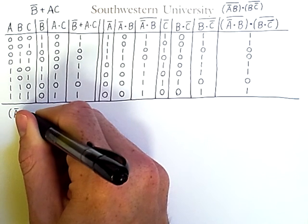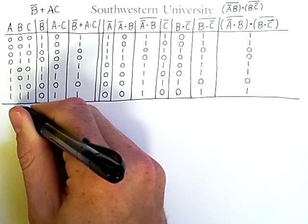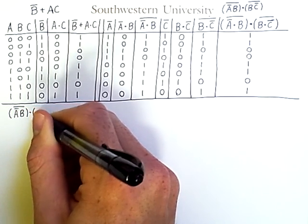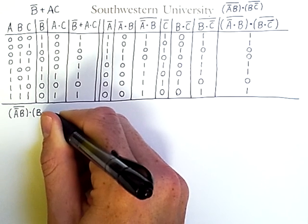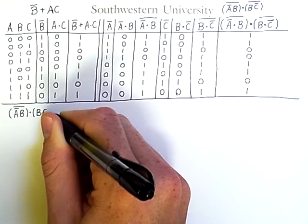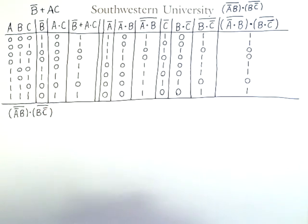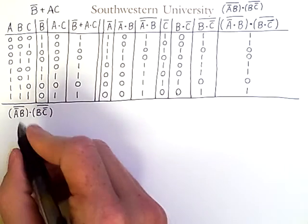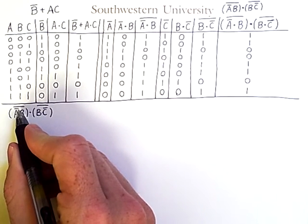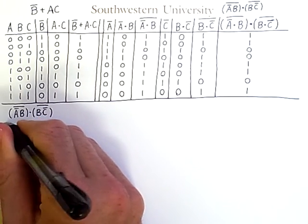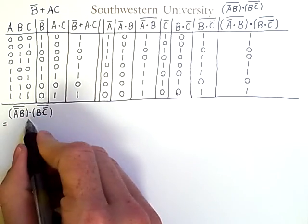Not A and B negated and B and not C negated. I want to simplify this expression using the laws from the previous video. Hopefully you can see that De Morgan's Law can be applied to both of these sub-expressions.